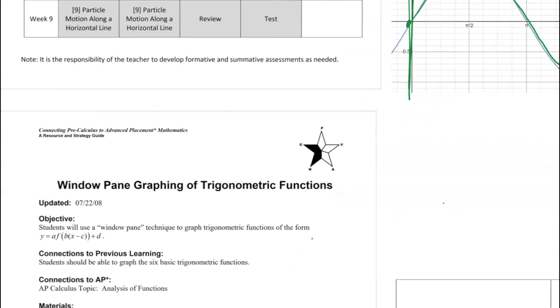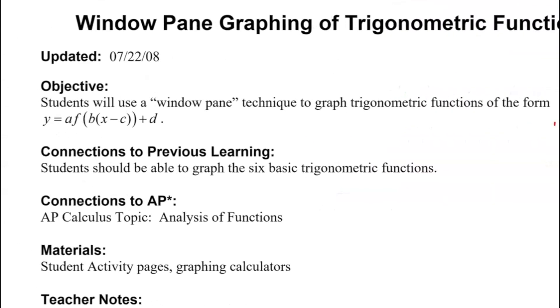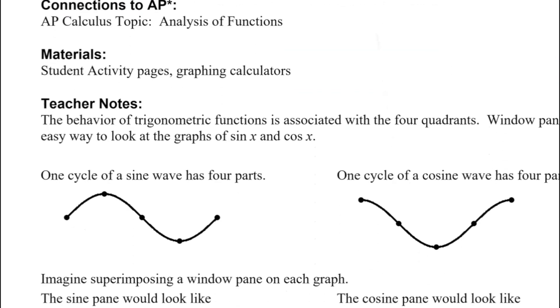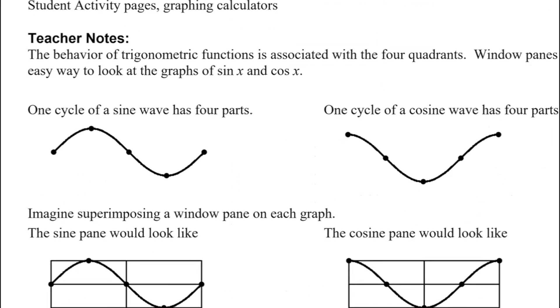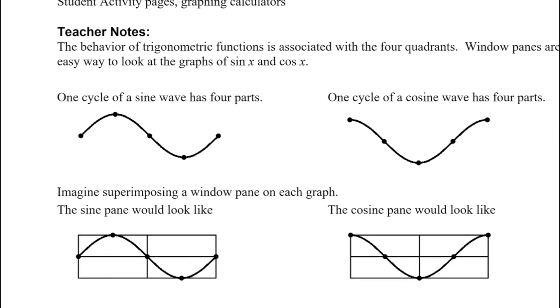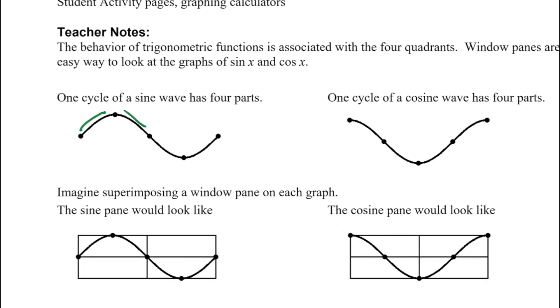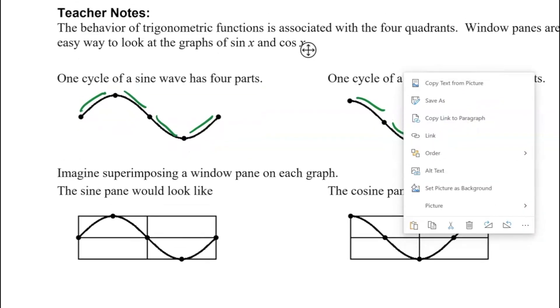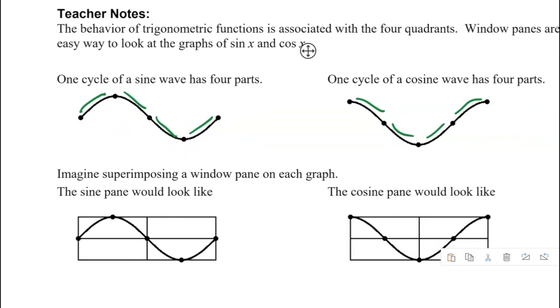So we want to look at what happens when we do have these shifts and translations and how to make the graphing of that somewhat easy. We're going to do that by thinking of a sine or a cosine wave as having four parts. You can see the four parts of a sine or cosine wave, and we're going to think about what it would look like if we superimpose a windowpane over the graph.